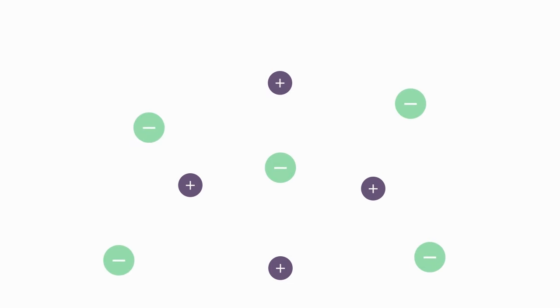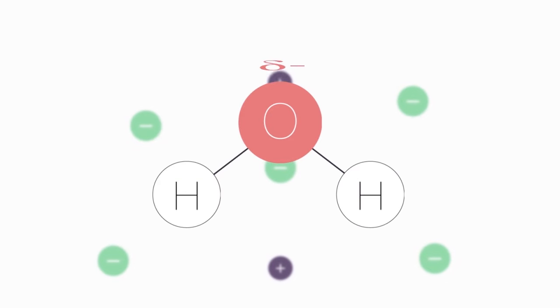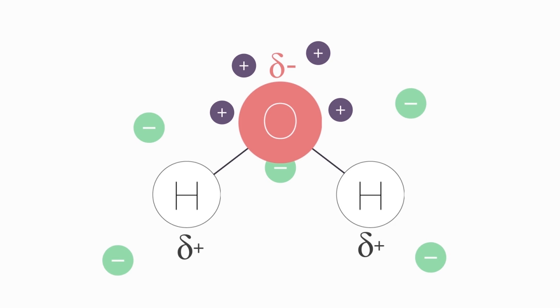These ions become stabilized in water due to the polar nature of water. As you can see, the sodium ions are stabilized by the negative dipole of water, and the chloride ions are stabilized by the positive dipoles of water.